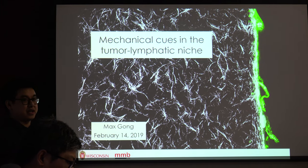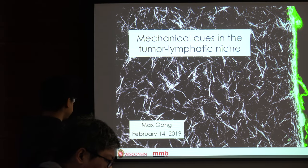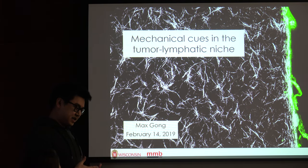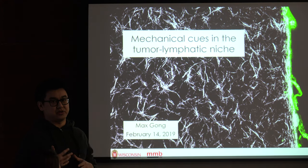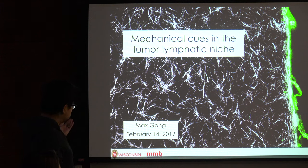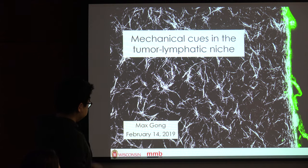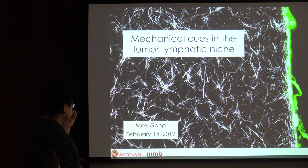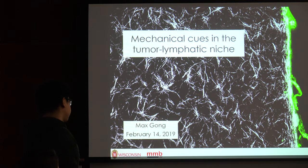This is some of our work studying mechanical cues in the tumor lymphatic niche of the tumor microenvironment and how these cues contribute to metastasis. As you can see from this image of a collagen matrix and a lumen border on the right, some of the cues we're interested in are collagen density, fiber content, fiber orientation, and how they might direct cancer cell invasion or lymphatic vessel growth.